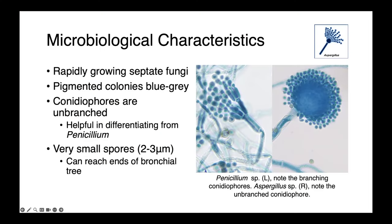Aspergillus are rapidly growing septate fungi. When we grow them in the lab, they produce pigmented colonies, which are sort of blue to gray. Microscopically, their conidiophores are unbranched, which is really helpful in differentiating them from Penicillium species, which can be quite similar grossly.